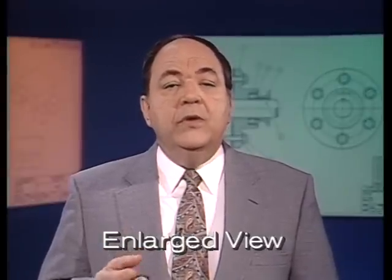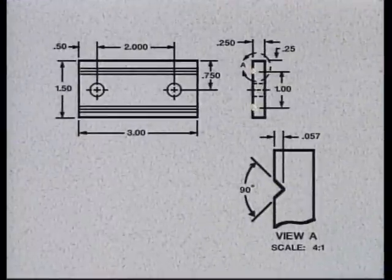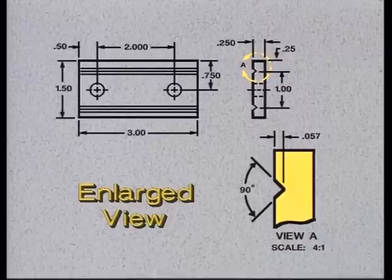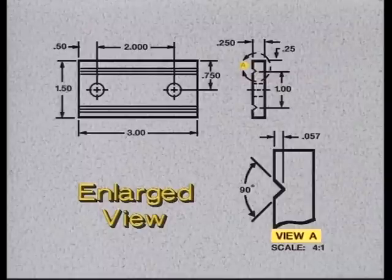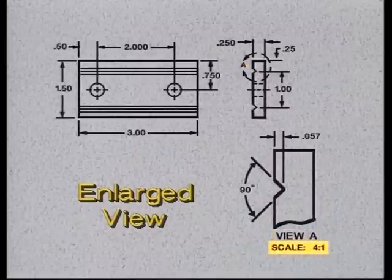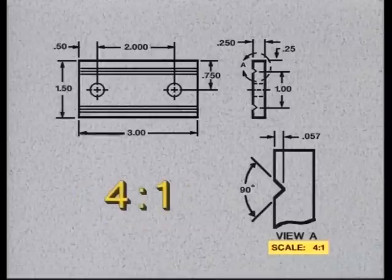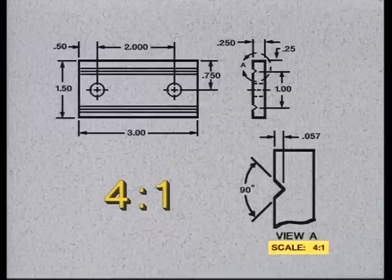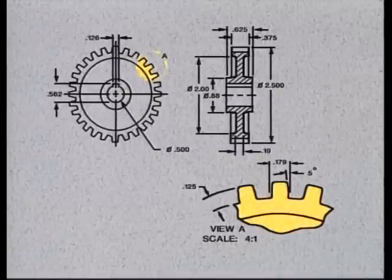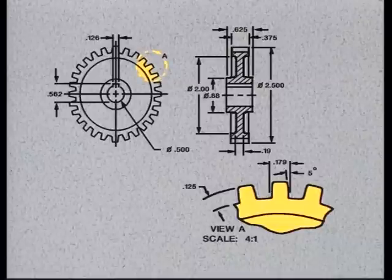An enlarged view is used to show a feature in greater detail than is possible in a principal view. For example, this part has two grooves which are too small to dimension clearly. So one of the grooves is enlarged and located wherever there is room for it on the drawing. The enlarged view and the circled area it represents are identified by the same letter. An enlarged view has a different scale than the rest of the drawing — in this case, four times scale, meaning the groove has been enlarged to four times its actual size. In another example, gear teeth circled in the front view are enlarged to four times scale, allowing them to be dimensioned clearly.